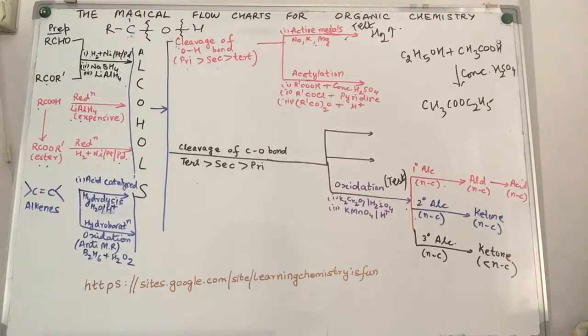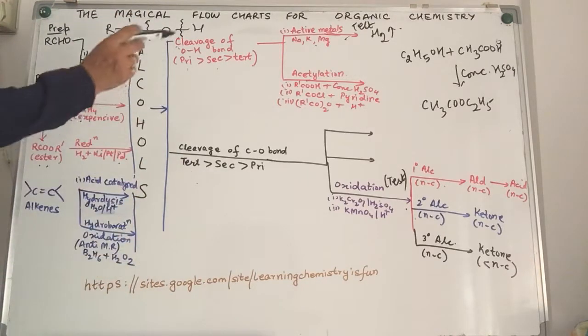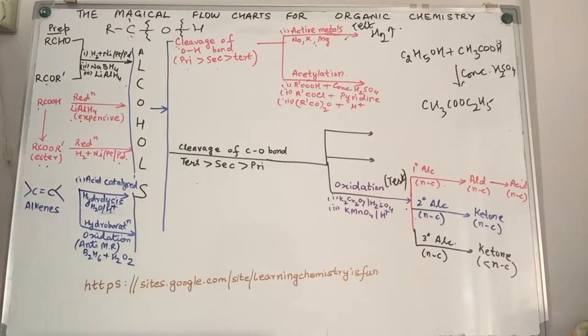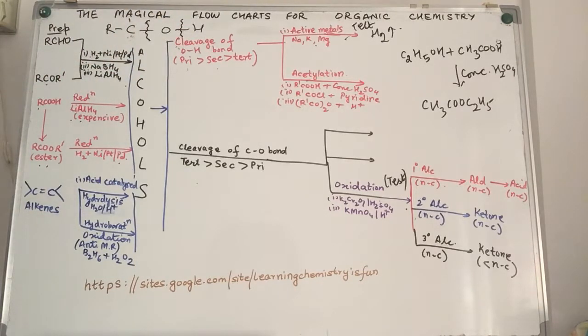In this flowchart, if you notice, you have the compound, various methods of preparation, the limitations in some cases, the properties listed, the distinguishing characteristics like we have done for primary, secondary and tertiary alcohol. In this flowchart you will also find the test for various types of compounds, and the order of reactivity of compounds.